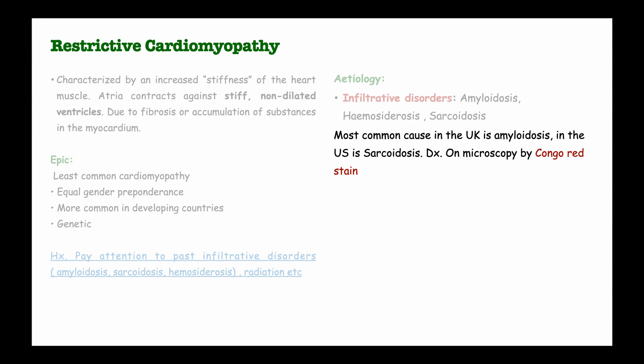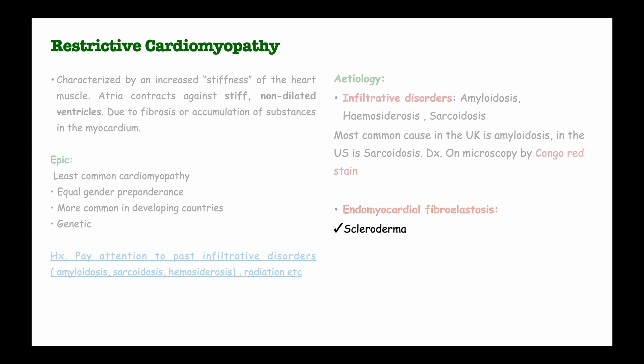The second major cause of restrictive cardiomyopathy is endomyocardial fibroelastosis. In this condition, there is thickening within the muscular lining of the heart chambers, usually due to an increase in inelastic collagen fibers, hence their inability to stretch. This condition is usually found in scleroderma, glycogen storage diseases, cancer metastasis, and radiotherapy — in which there is direct physical damage to the myocardium.